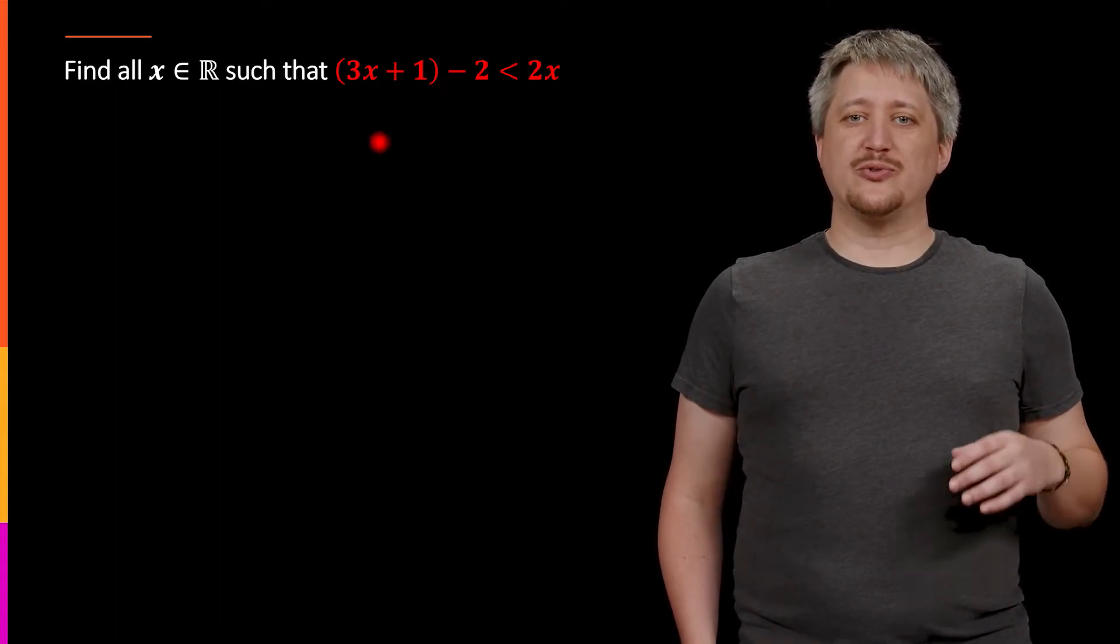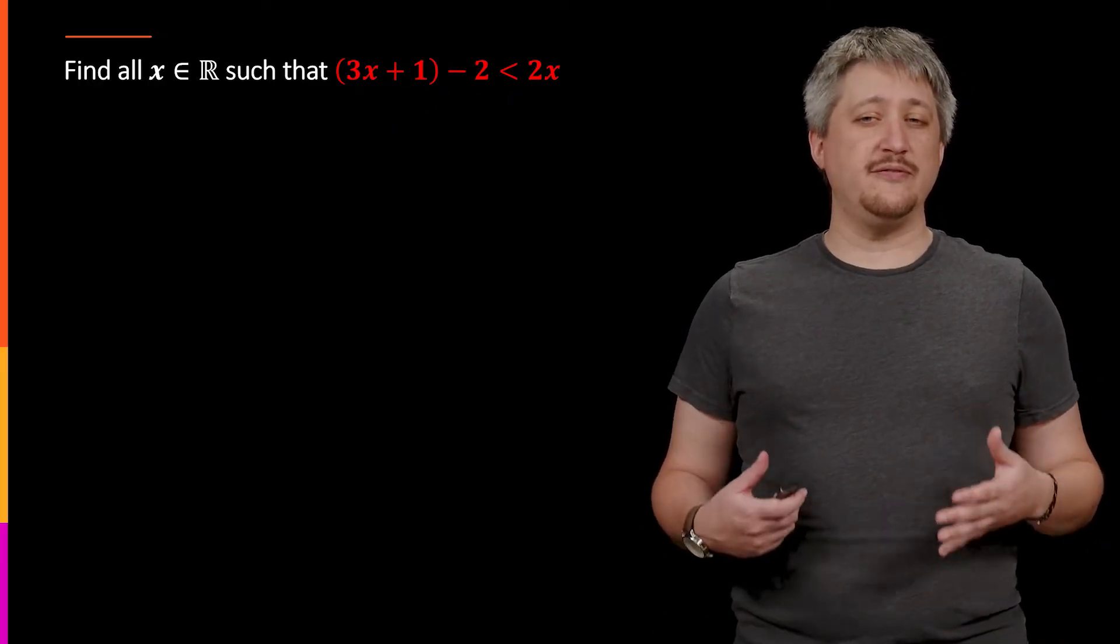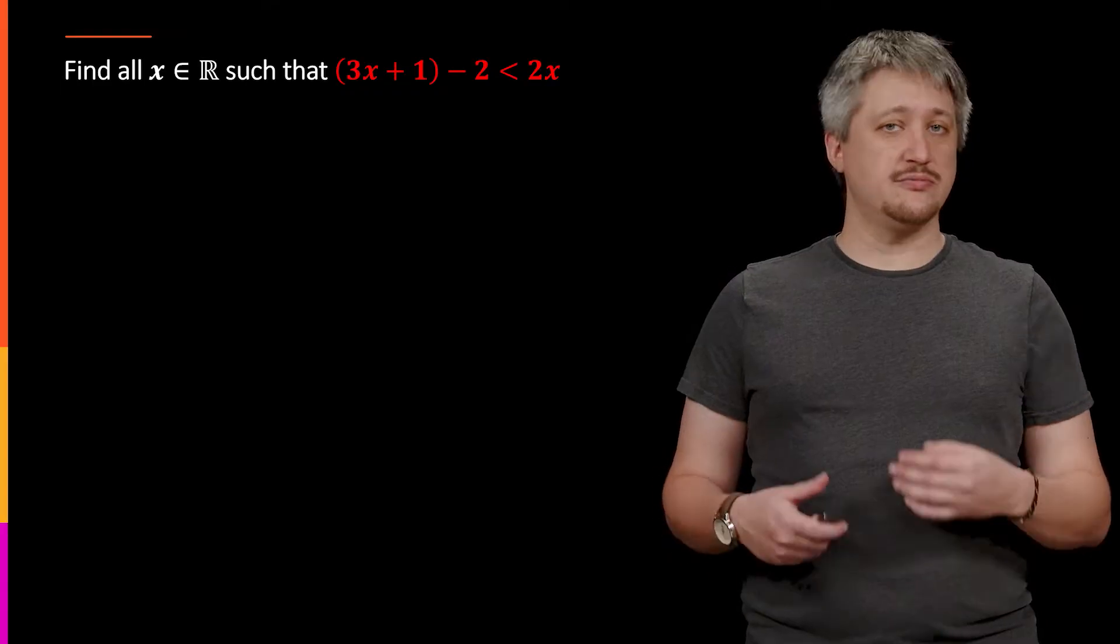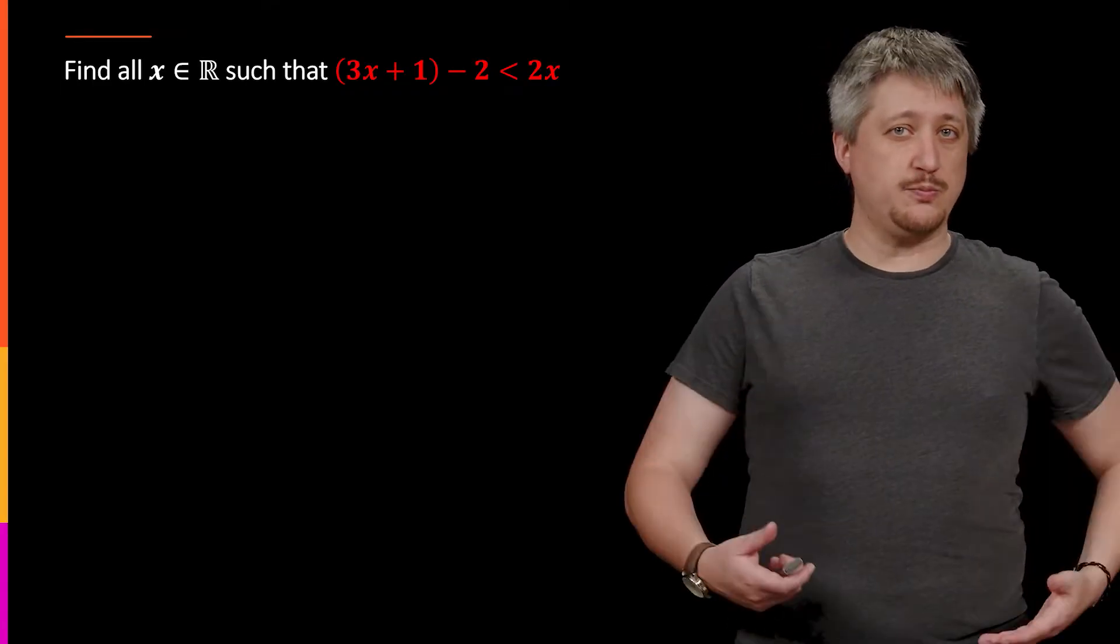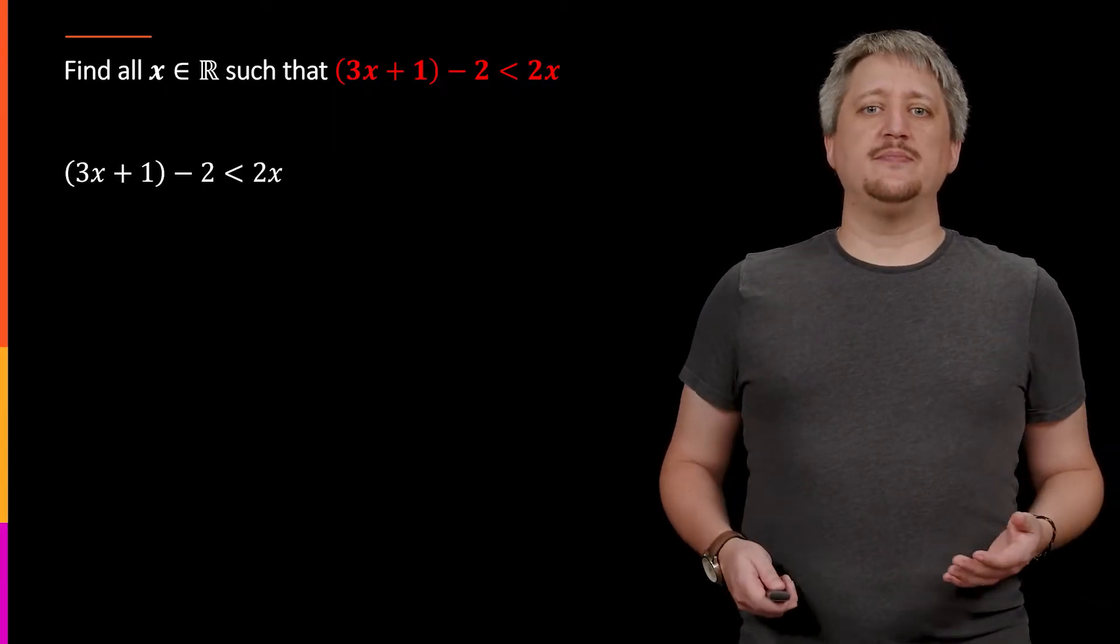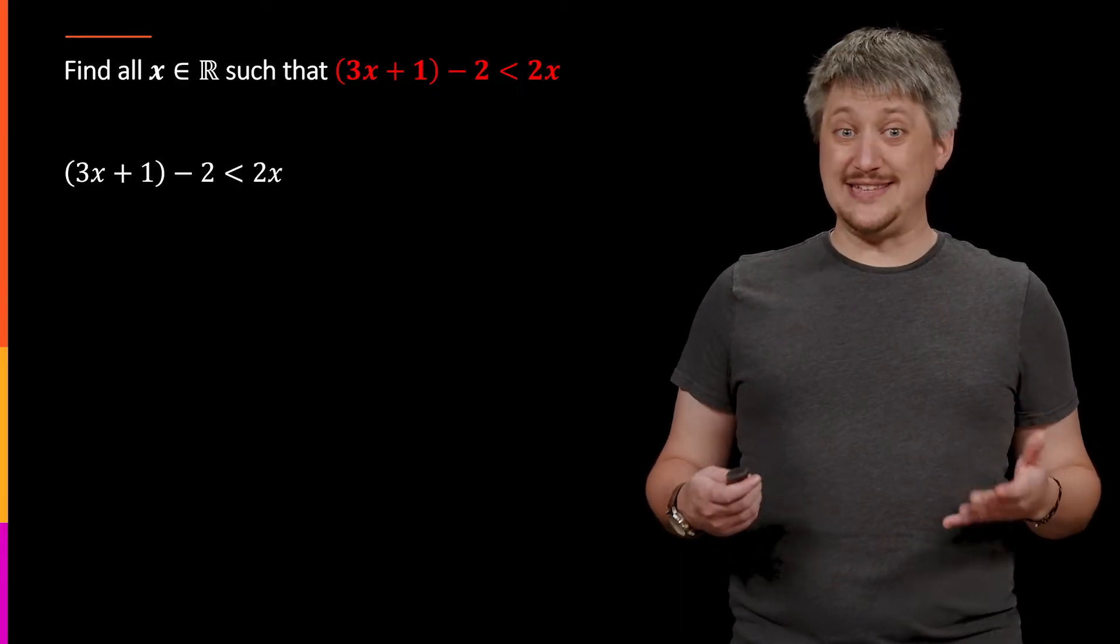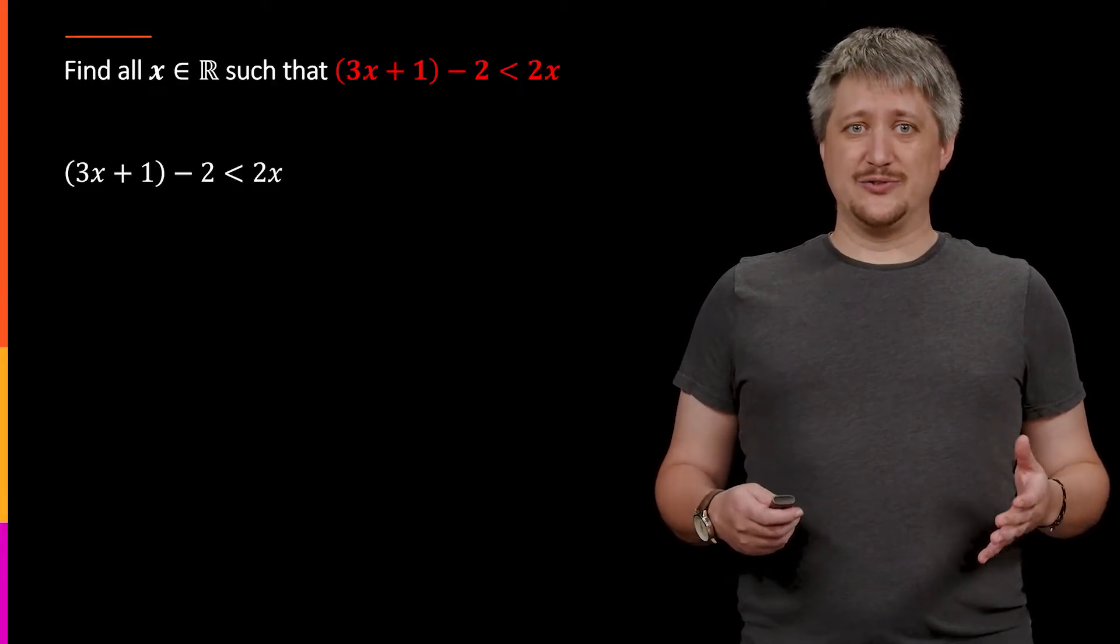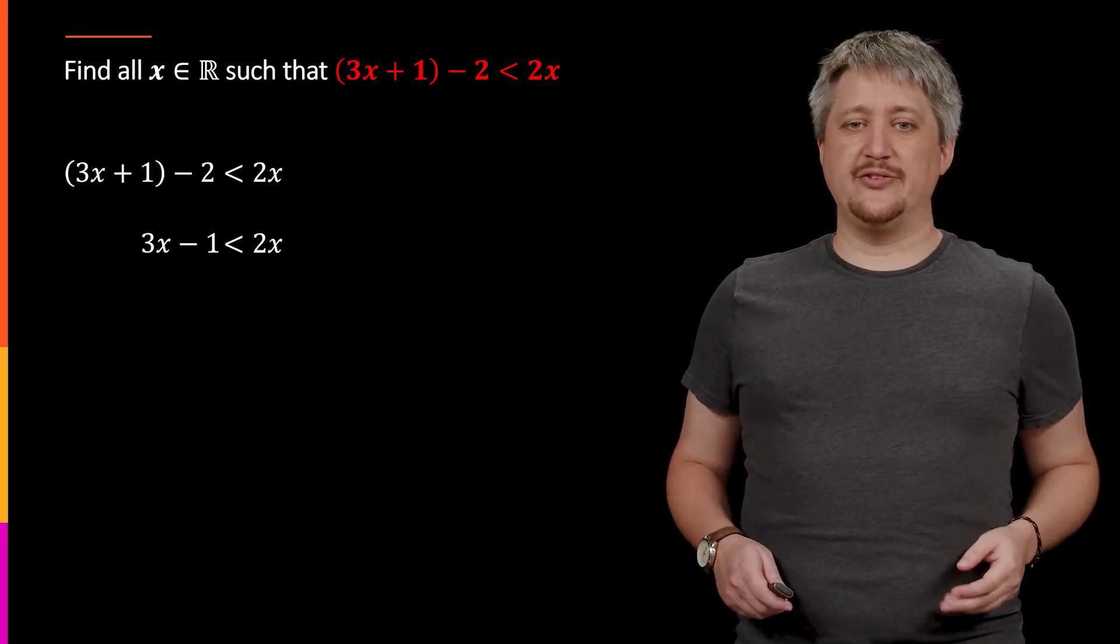So when you're solving an inequality, what you're really looking for is to find all of the values of the variable, in this case x, that make this inequality true when you plug it in and check. To solve this, what we're going to do is just take this thing and treat it like it's an equality. So we're going to isolate x.